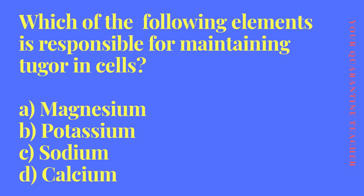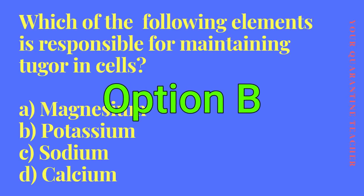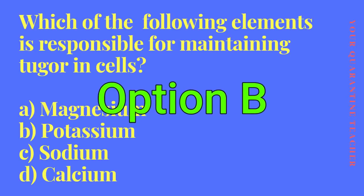Which of the following elements is responsible for maintaining the turgor pressure in cells? The answer is Option B — potassium.